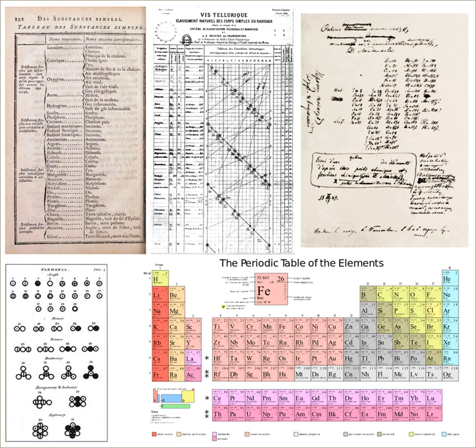The periodic table is an arrangement of the chemical elements organized on the basis of their atomic numbers, electron configurations, and recurring chemical properties. Elements are presented in order of increasing atomic number. The standard form of the table consists of a grid of elements with rows called periods and columns called groups.